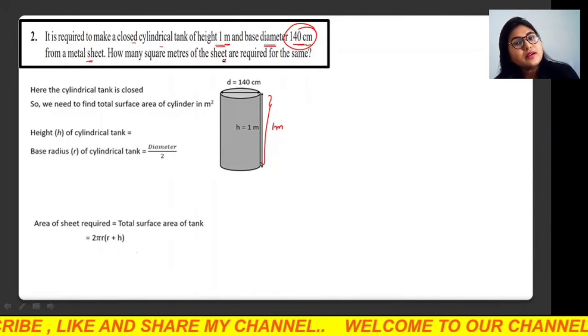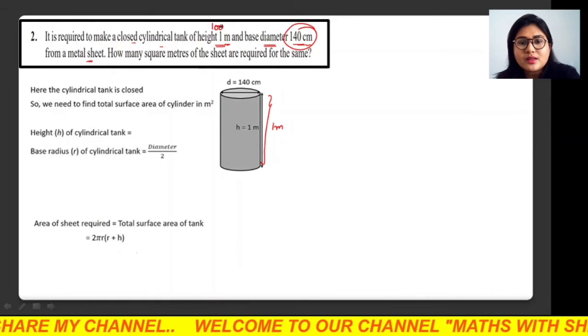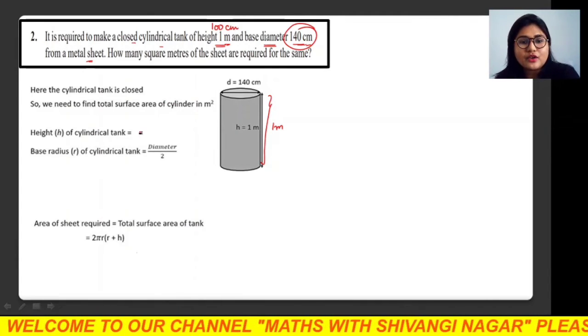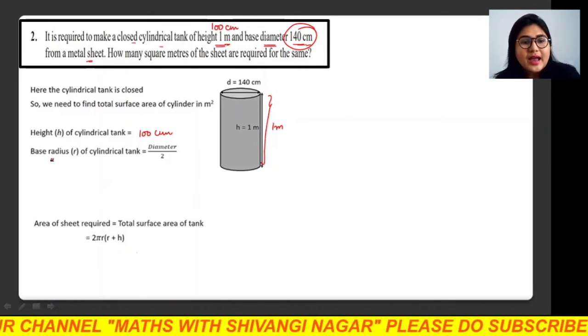What I am doing here is converting this height into centimeters. So one meter equals 100 centimeters. So what is the height of my cylindrical tank here? 100 centimeters.